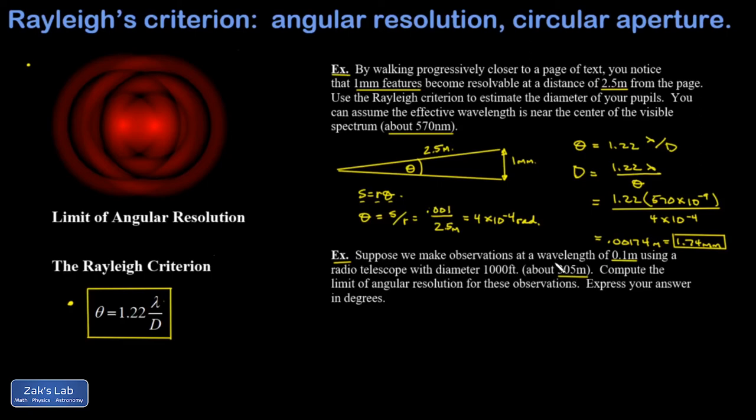I want to compute the limit of angular resolution for these observations. In other words, the angle given by the Rayleigh criterion—what's the smallest resolvable angle in the sky? Finally, we're asked to express our answer in degrees.